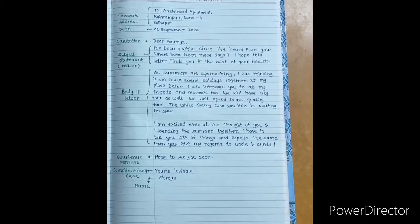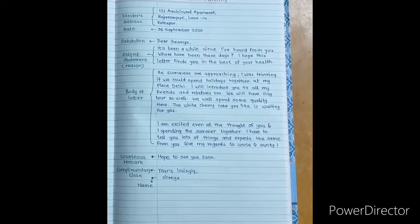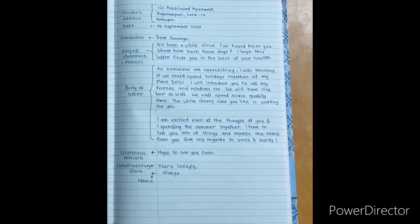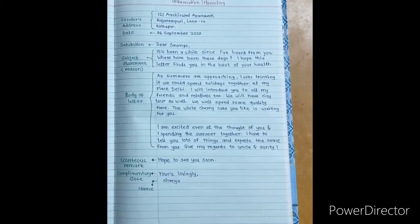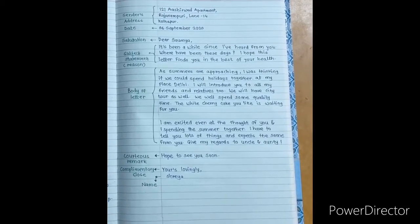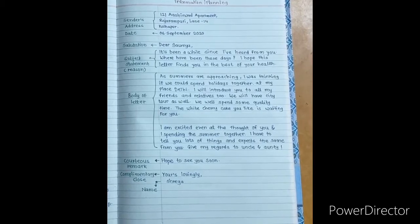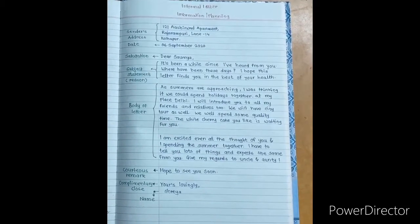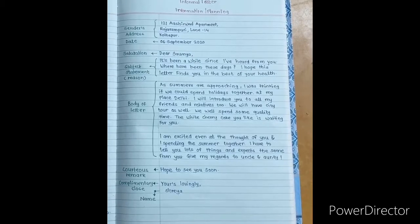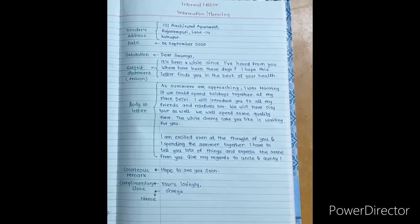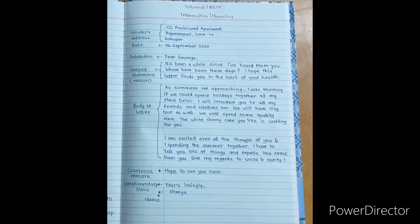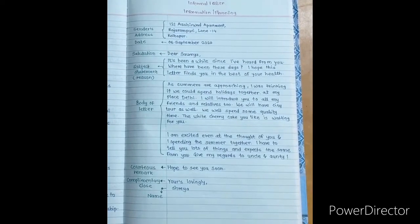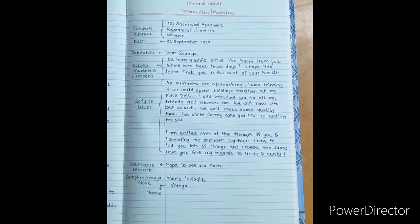The white cherry cake you like is waiting for you. I am excited even at the thought of you and I spending the summer together. I have to tell you lots of things and expect the same from you. Give my regards to uncle and auntie. The courteous remark is 'Hope to see you soon.' Complimentary close is 'Yours lovingly' or 'Yours favorite' you can write. And the name of the sender is Shreya. So we have seen in this informal type of letter we have used a very casual language. We are very familiar with the person whom we are writing a letter, so this one is very much easier. You can write your own also. You just need to follow the features or the points while writing the letter.